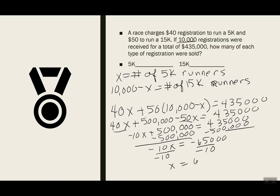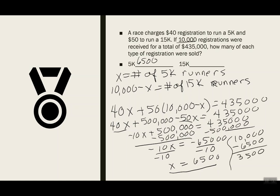Divide by negative 10, so x will be 6,500. What did x stand for? x was the number of 5k runners, so 6,500 ran the 5k. And we said 10,000 minus x — so subtract that 6,500 — and get 3,500. That tells me the rest of the runners ran the 15k.